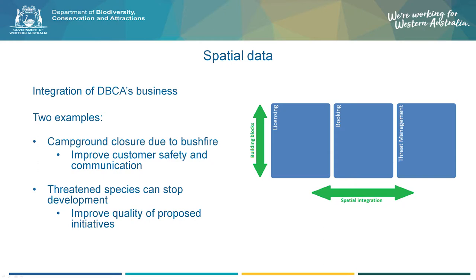Using spatial data for one particular application is not what we really want. In the department we have been developing stacks of applications. You see three of those stacks: one is licensing — we're heavily involved in licensing as government. The second is e-commerce — our bookings, campgrounds, moorings around Rottnest Island. The third is threat management — threatened species in this state, making sure we protect our species.